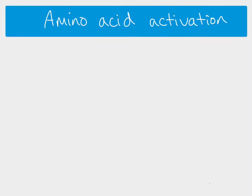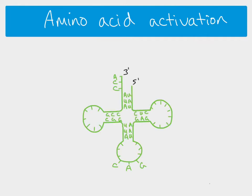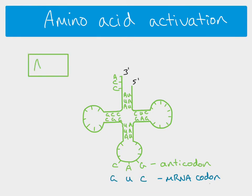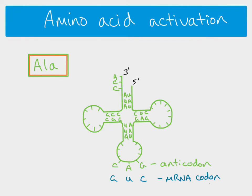Before the transfer RNA is able to collect an amino acid and take it to the ribosome, the amino acid has to be activated. The anticodon on the tRNA is complementary to a messenger RNA codon, and looking up that codon in an mRNA codon table tells you which amino acid corresponds to it. Activation involves a reaction using ATP — you don't need to know the details, but the ATP joins with the amino acid as an intermediate, storing some energy that can later be used to form peptide bonds.